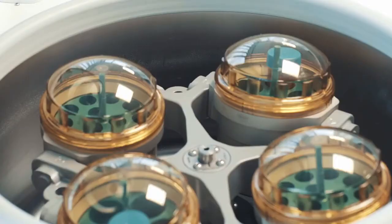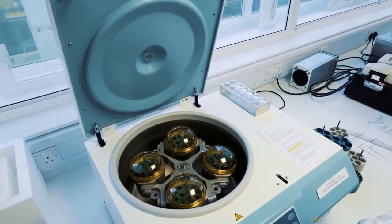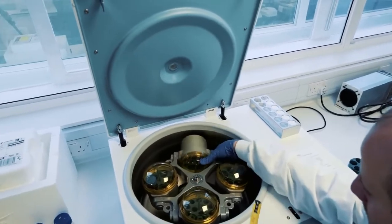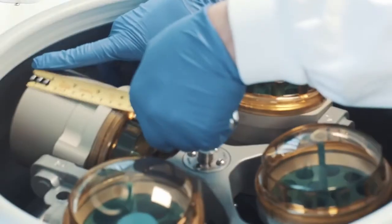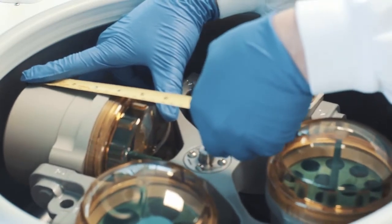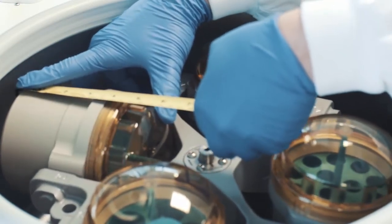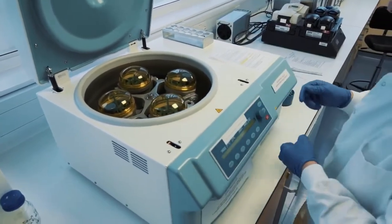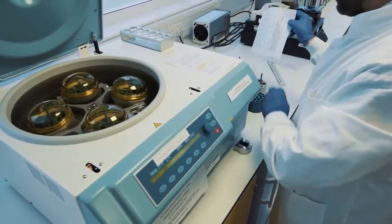However, if your centrifuge can only be set at RPM, it will be necessary to calculate what speed to use. This can easily be done by measuring the radius of the rotor, i.e. measuring the length from the center of the rotor to where the bottom of the tubes are when the rotor is spinning. This measurement can then be used on the conversion graph to convert RPM to RCF.